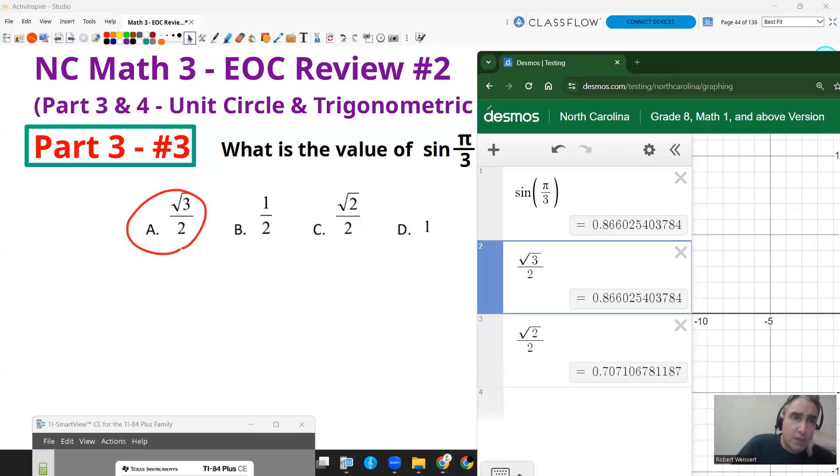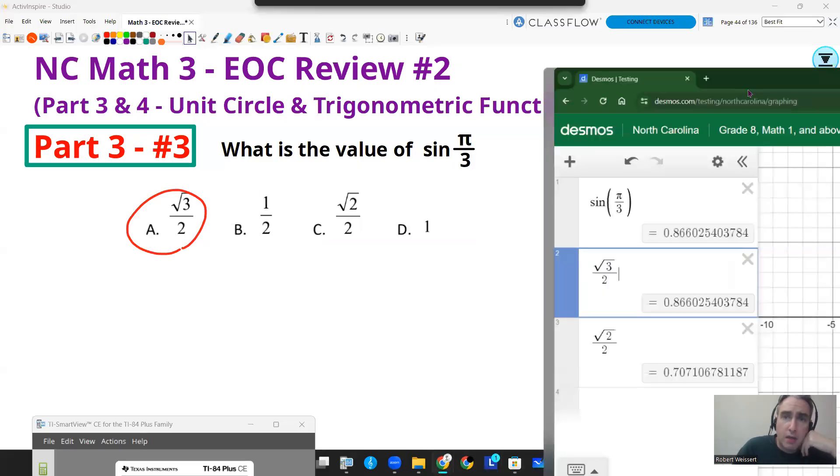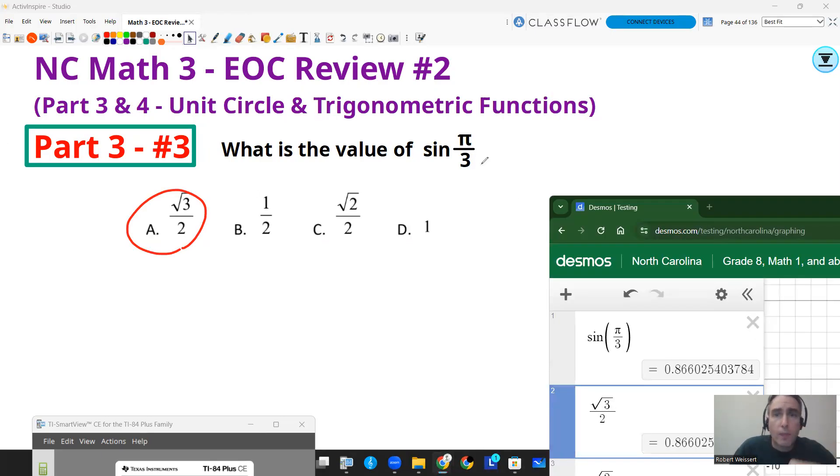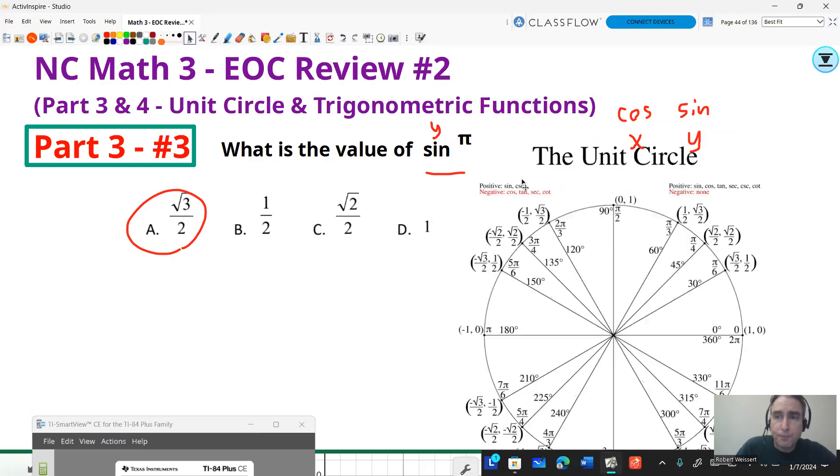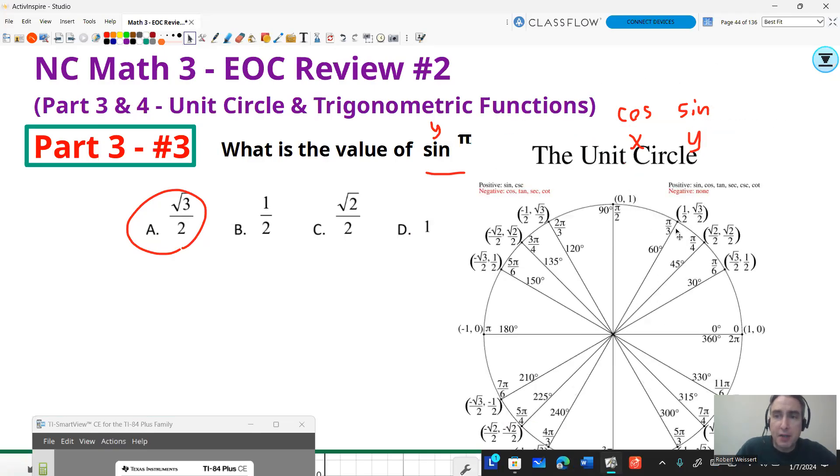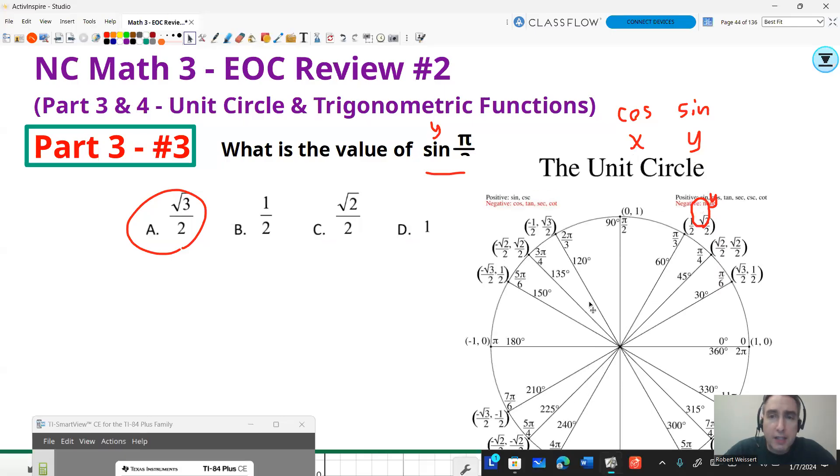Now if you know your unit circle, the sine is always going to be the y value. So if I know that the sine is the y, the cosine is the x value, and the sine is going to be the y value in the unit circle. So if I know my unit circle, and I know where π over 3 is, and I pull that over here, π over 3, that's at 60 degrees. And the y value at 60 degrees happens to be √3 over 2. So again, knowing your unit circle can help you get a question like that correct. All right, let's continue the video.